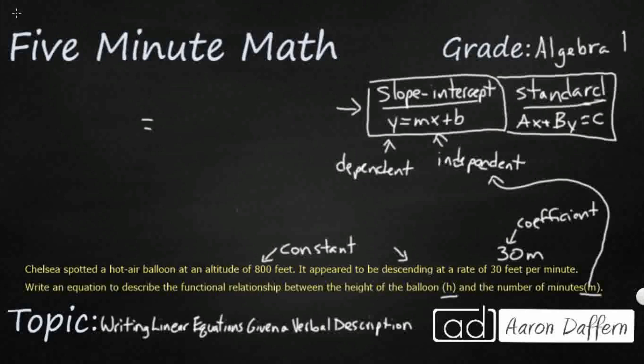So we're going to multiply that by 30. But you know what? We're starting at 800 feet and we're going down. So it's a negative slope.